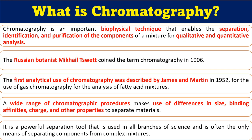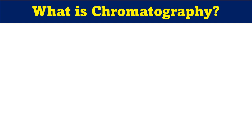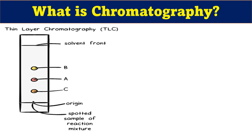Chromatography is a powerful separation tool used in almost all branches of science, and is often the only means of separating components from a complex mixture. To explain how it works: we have two reactants A and B, and when these two react they give a third product C. In the reaction mixture we will have unreacted A, unreacted B, and the desired product C. We want to separate all three—A, B, and C—individually.